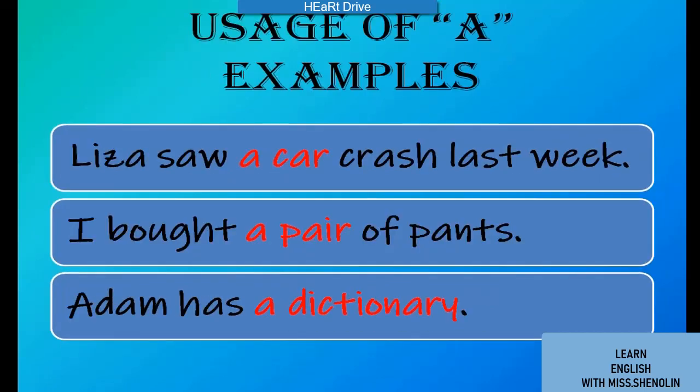Some examples of the article 'a' are: 'Liza saw a car crash last week.' 'I bought a pair of pants.' 'Adam has a dictionary.' In these examples, the first letter of each highlighted word gives a consonant sound, so we use 'a' before them.